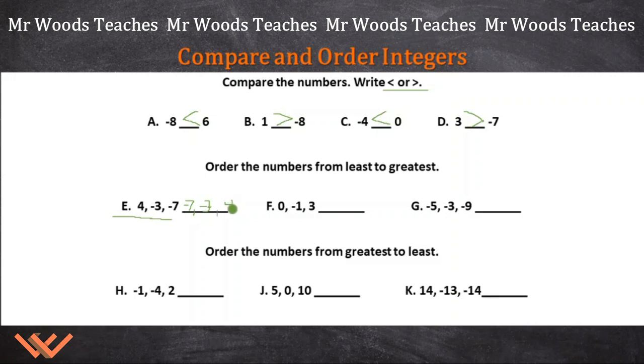Because 4, again, is to the right of 0. First number I encounter when I'm going on that number line is being negative 1, negative 2, negative 3, and then negative 4, negative 5, negative 6, negative 7. So this is going from least to greatest.